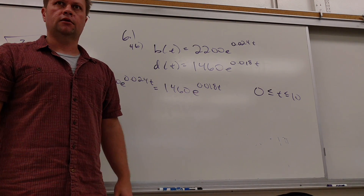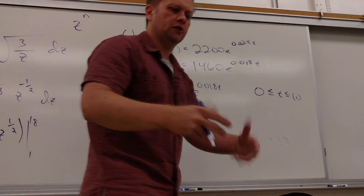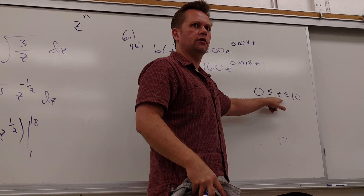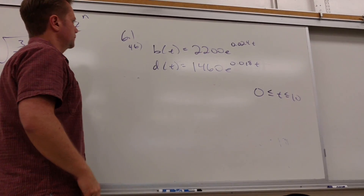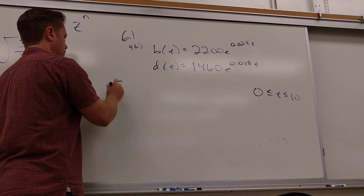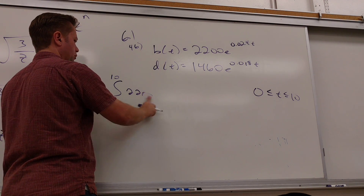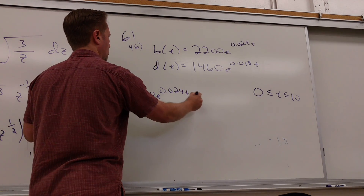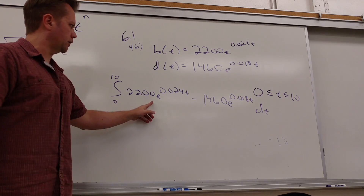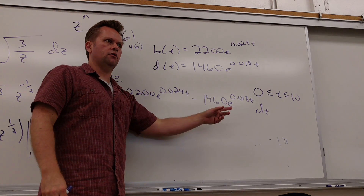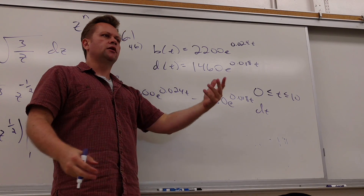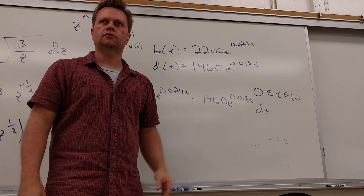Thank God I don't have to try to solve this. On a test I'm going to give you something you can actually solve, and you know I'm going to have a place where they cross in the interval. So obviously which one's on top? B. So I do integral from 0 to 10: 2200e to the 0.0024t minus the death rate. This is my birth rate, this is my death rate. If I take the difference and integrate over 10 years, I'm going to get the pure population growth. You could include immigration in and out — those are different rates.